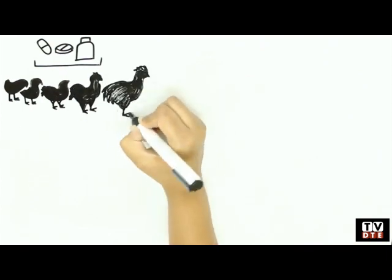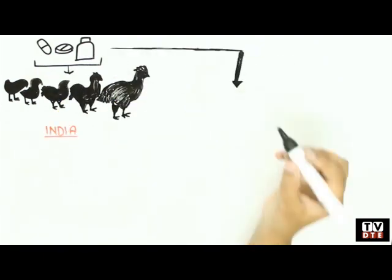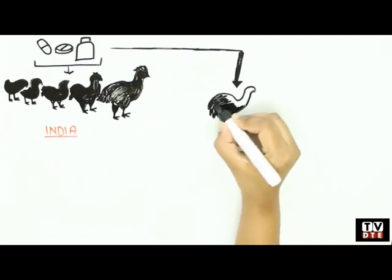Low doses of antibiotics kill microbes in the intestine of the chicken and help the bird absorb nutrients better, resulting in weight gain.